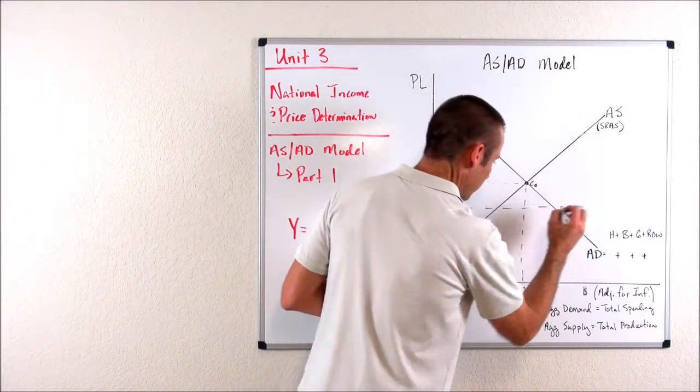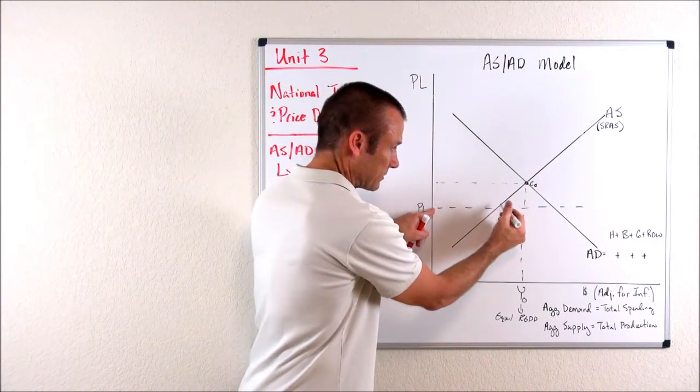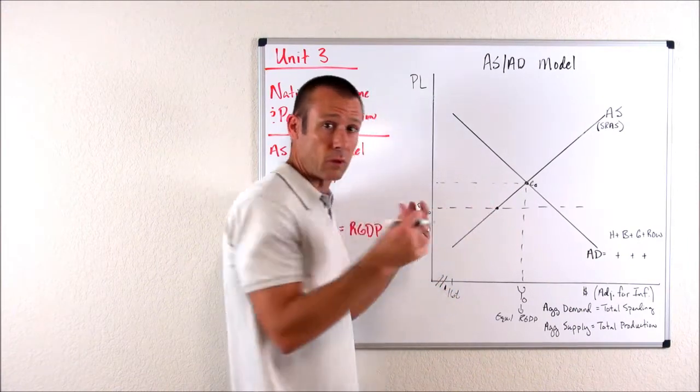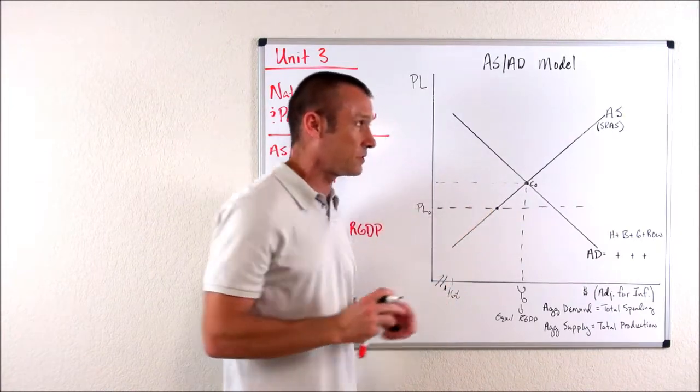this horizontal distance up to this dot hitting that curve would be our aggregate supply. What I will often refer to that is our total production of goods and services, because that's what aggregate supply is.